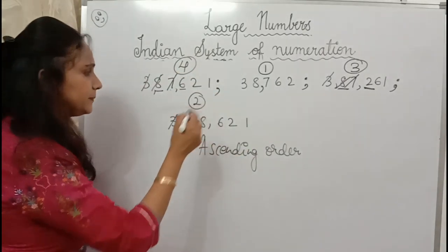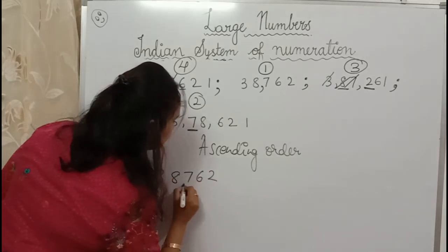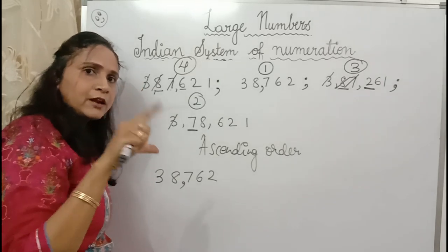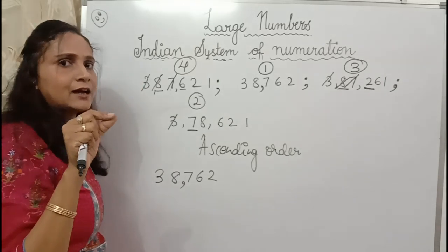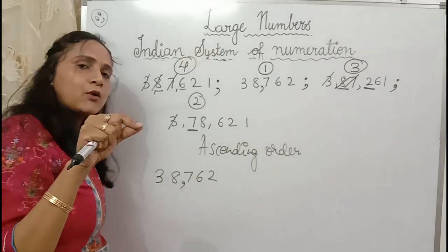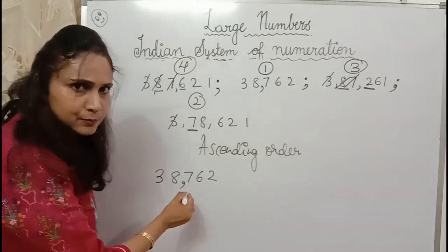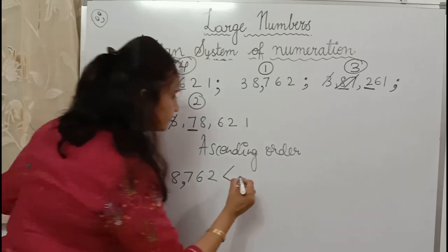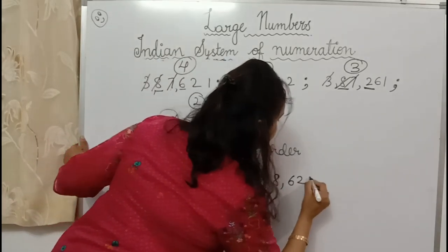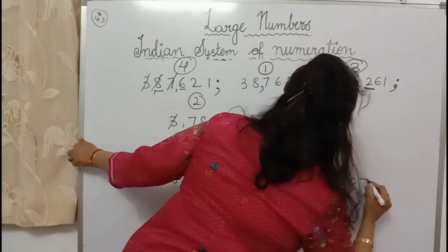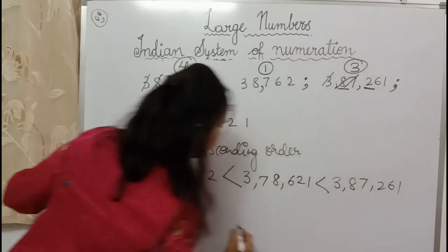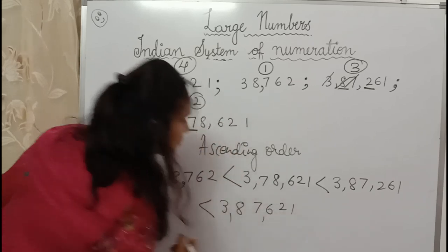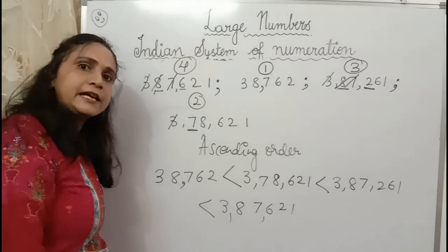In ascending order, we place small to big. The crocodile's mouth always opens at the bigger number — crocodile likes big food, not small food. So this sign opens toward the bigger number. This way you arrange numbers in ascending order.